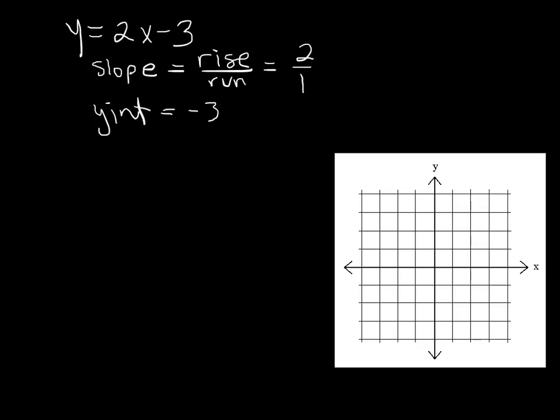And then we have our y-intercept of negative 3. So let's actually have a look at what this looks like now. If I were to graph this, that would mean that my y-intercept is negative 3, so I want to count down. That's 0, 1, 2, 3, so I'm going to plot my point right there at negative 3.